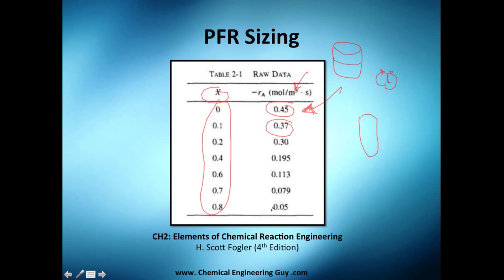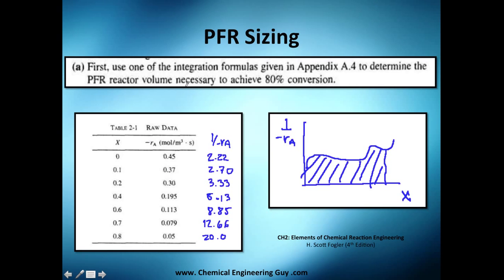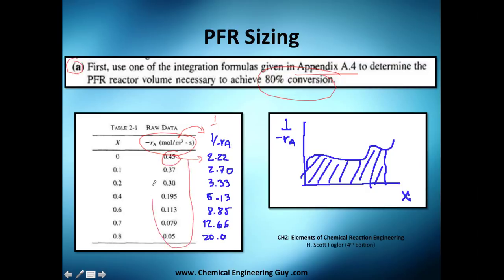For letter A, we first use the integration formula to find the volume needed for 80% conversion. The key step is taking the inverse of the rate data — dividing 1 by each -r_A value — to get F_A0/-r_A versus X. The area under that curve gives the PFR volume per unit molar flow rate, which is the design equation for a PFR.